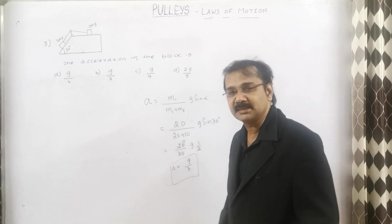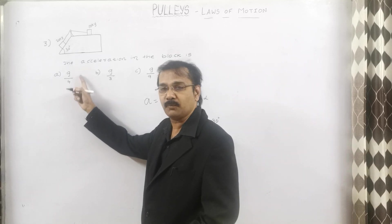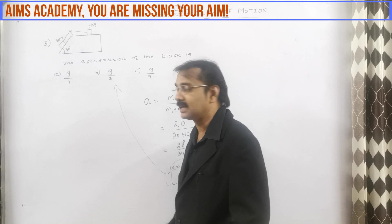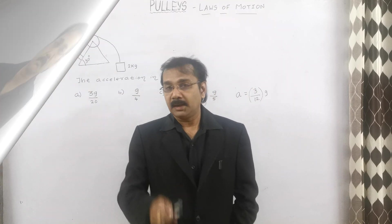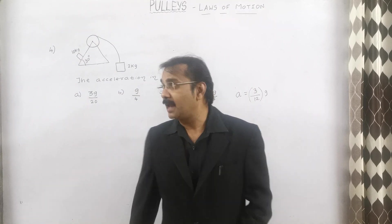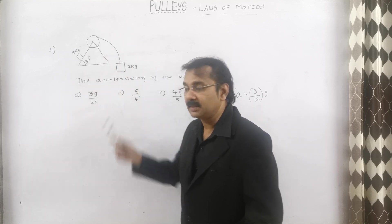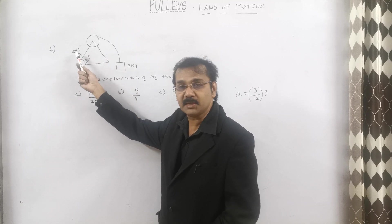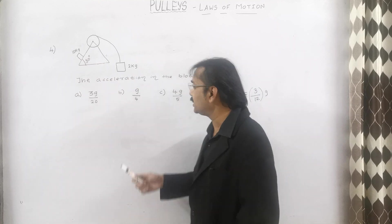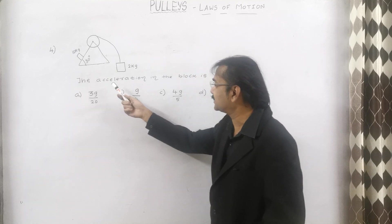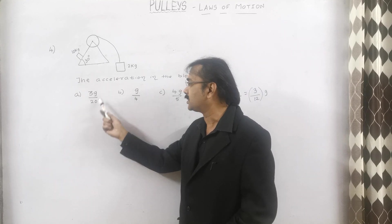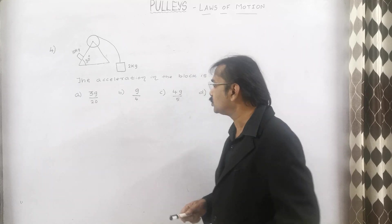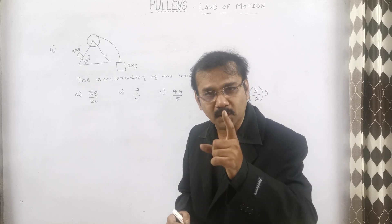A is equal to G by 3. Let us see where that answer lies in the options. Option B is G by 3 — the answer is coinciding, so our answer lies in option B. Let us go for the fourth question, which is also very important. See the diagram here. The angle is given in the form of a triangle, and one block of 10 kg is sliding down while the other is 2 kg. The question asks for acceleration. Use my cheat code formula.